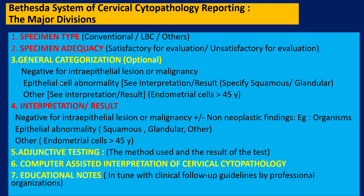The ones in red are mandatory in your reporting using this system. The ones in yellow are optional. You need to comment on the type of specimen — whether you are reporting on a conventional Pap smear or a liquid-based cytology preparation like ThinPrep or SurePath. You need to comment on specimen adequacy. General categorization is optional because once you use the interpretation/results section, this categorization becomes more or less redundant.